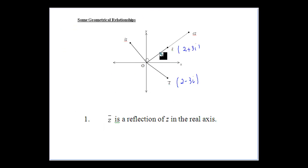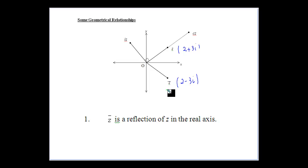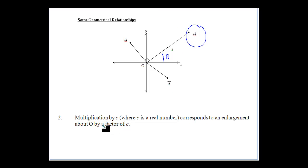There are also geometric relationships to consider. The conjugate of a complex number is its reflection in the x-axis. When we multiply a complex number by a positive real number c, all it does is produce an enlargement — the argument stays the same and only the modulus is scaled.